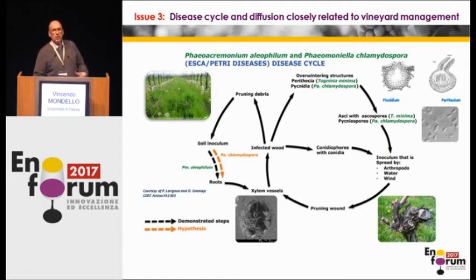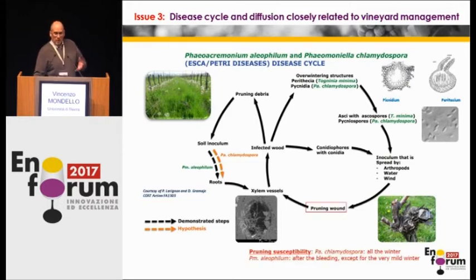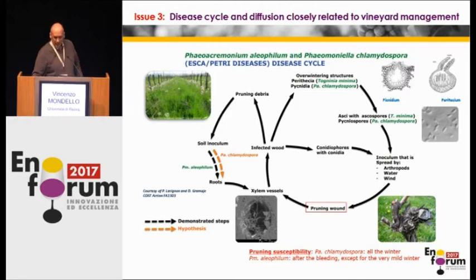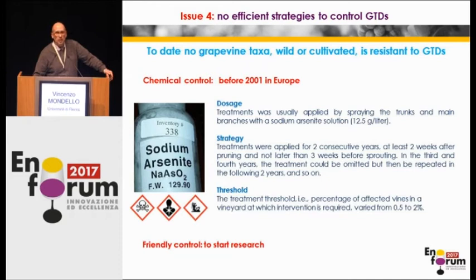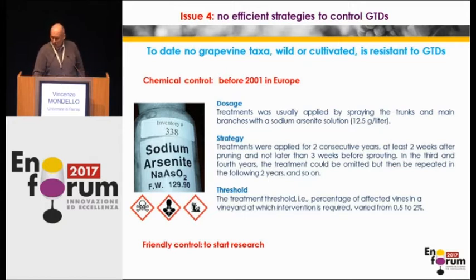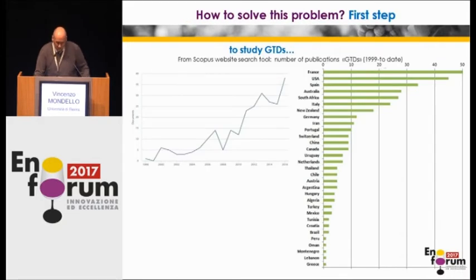Another reason why these diseases are dangerous for the vineyard relates to management techniques, including pruning. Pruning wounds are the key channel of infection. In addition, pruning wounds are susceptible to infection by pathogens throughout the winter for several months, which is when the spores of pathogens are present in the vineyard. Furthermore, there are no active chemical or biological ingredients that can effectively fight the disease. One good example is sodium arsenate, which was forbidden due to its negative impact on human health and the environment — and this is one of the reasons why these diseases became more virulent.